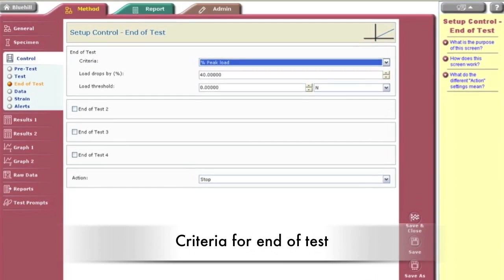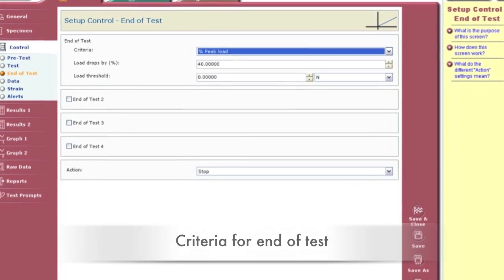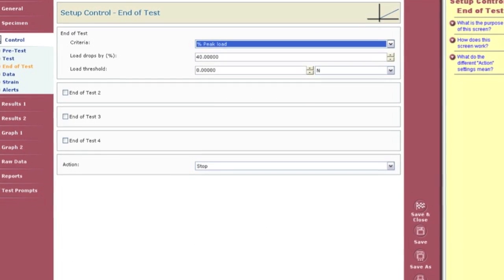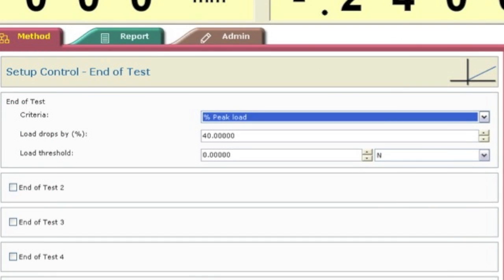The end of test tab identifies the criteria for the end of the test. A large load drop is experienced when sample failure occurs. For this test, when the sample load drops by a certain percentage of the peak load, the machine will stop. This percentage depends on the type of sample.